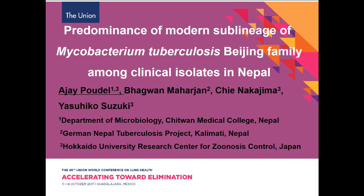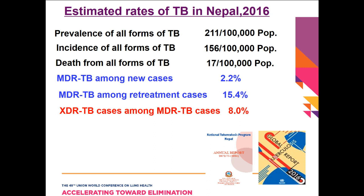Good afternoon. Thank you for the introduction. I'm going to present about the modern sublineage of mycobacterium tuberculosis prevalent in Nepal. This is the current TB scenario in Nepal. Tuberculosis is one of the major public health problems in Nepal. The prevalence of all forms of TB is 211 per 100,000 population, incidence is 156 per 100,000, and death is 17 per 100,000.